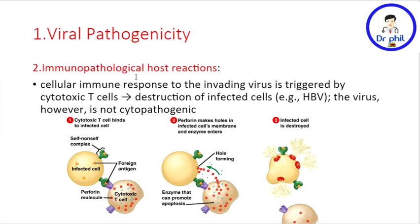The second mechanism is through immunopathological host reactions. This is possible because the cellular immune response to the invading virus is triggered by cytotoxic T cells, which leads to destruction of infected cells. A typical example is HBV — Hepatitis B Virus — which is not cytopathogenic itself.